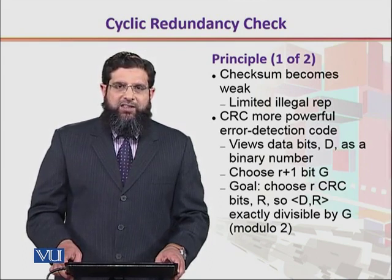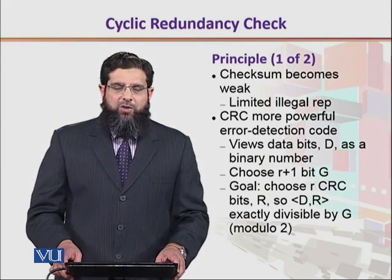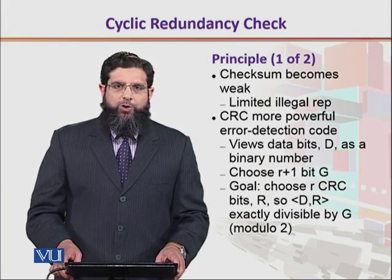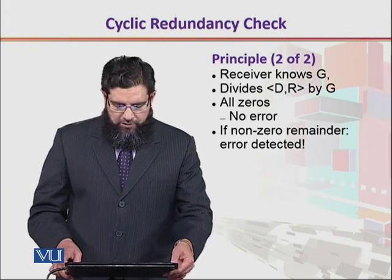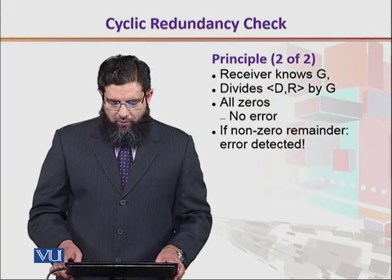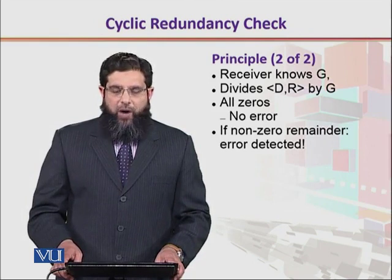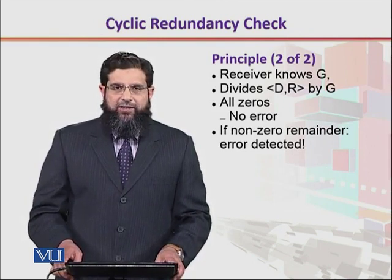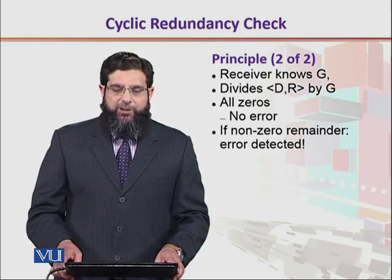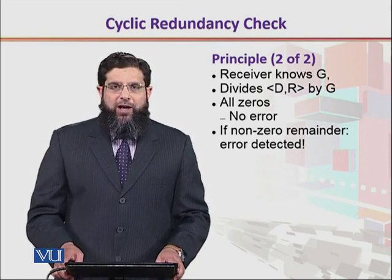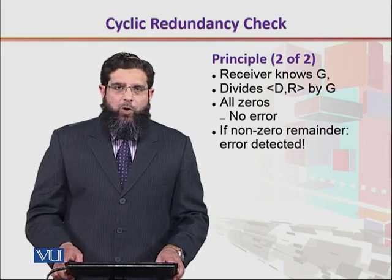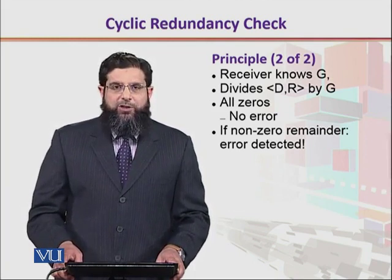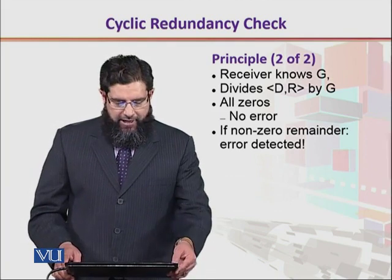On the receiving side, we take that data along with the remainder, divide it with the same generator that was used on the sender side, and then find if an error has occurred or not. If the receiver divides the data and the appended remainder by g and the result is all zeros, it means no error happened and there is no bit in error. If the remainder is non-zero, it means an error has been detected.